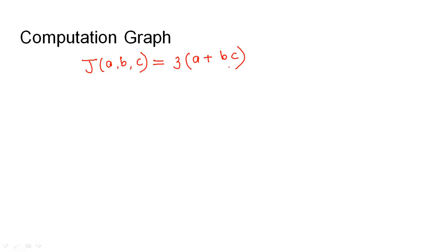This function is: J equals three times of (a plus b times c). We could also use the logistic regression cost function J(w, b) to study the computation graph, but at the beginning that cost function is quite difficult, so I am taking this simpler function: J(a, b, c) = 3(a + bc).